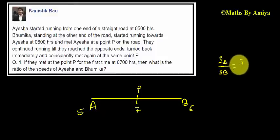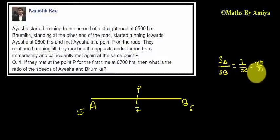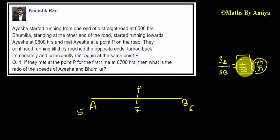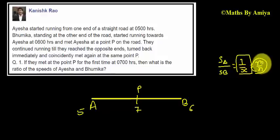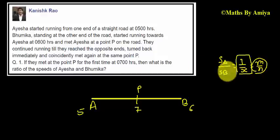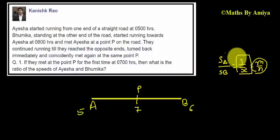Take the speed ratio as 1 is to X. We can also take speed ratio as M is to N, but it is always better to take the speed ratio as 1 is to X. Whenever we have to find the ratio, the best approach is to take 1 is to X, because we have only one variable in the equation. So the speed of ISI is 1 km per hour and the speed of Bhoomika is X km per hour.